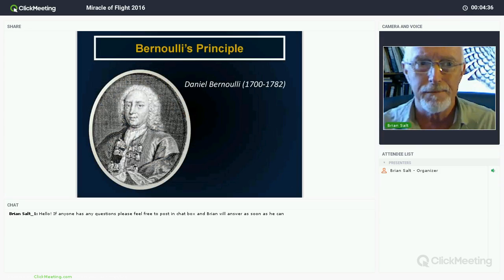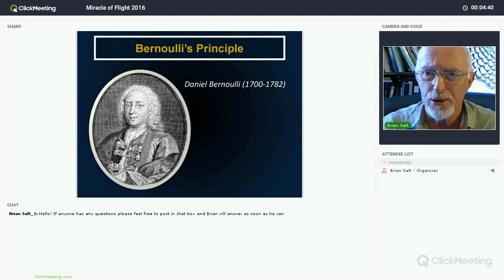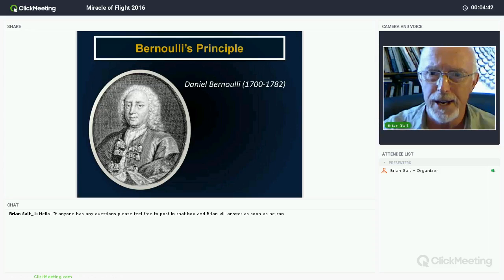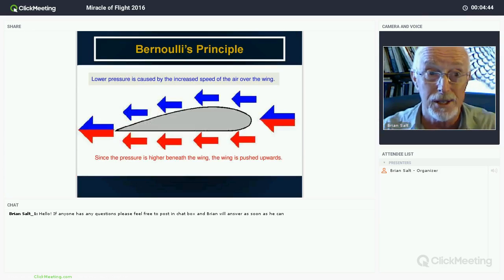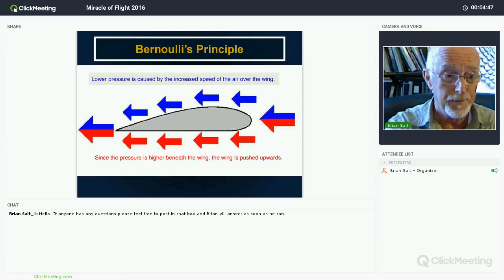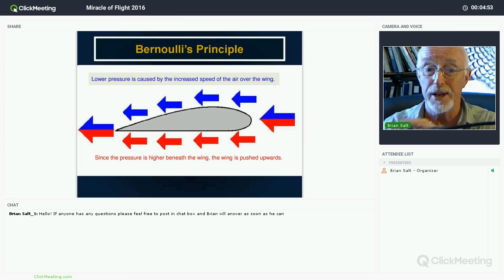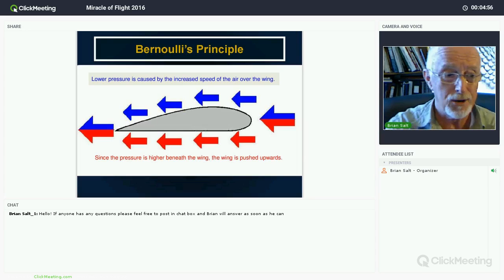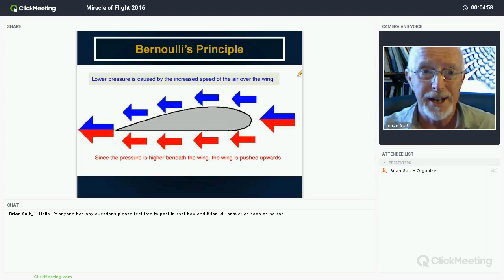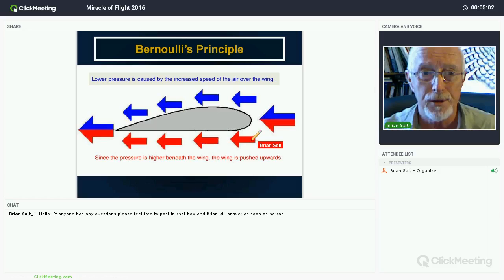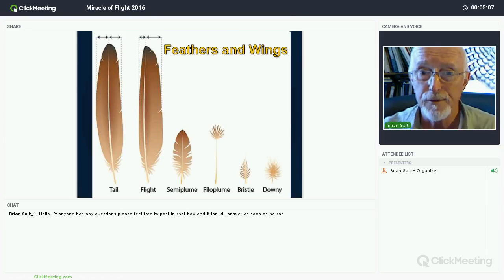There was a gentleman back in the 1700s, his name was Bernoulli, and he created a principle of flight. Bernoulli's principle states that as air crosses over a curved surface like over the feather, it creates a low pressure system, especially if the air is traveling quickly over the feather. The pressure created underneath the wing, underneath the flat surface, creates lift.